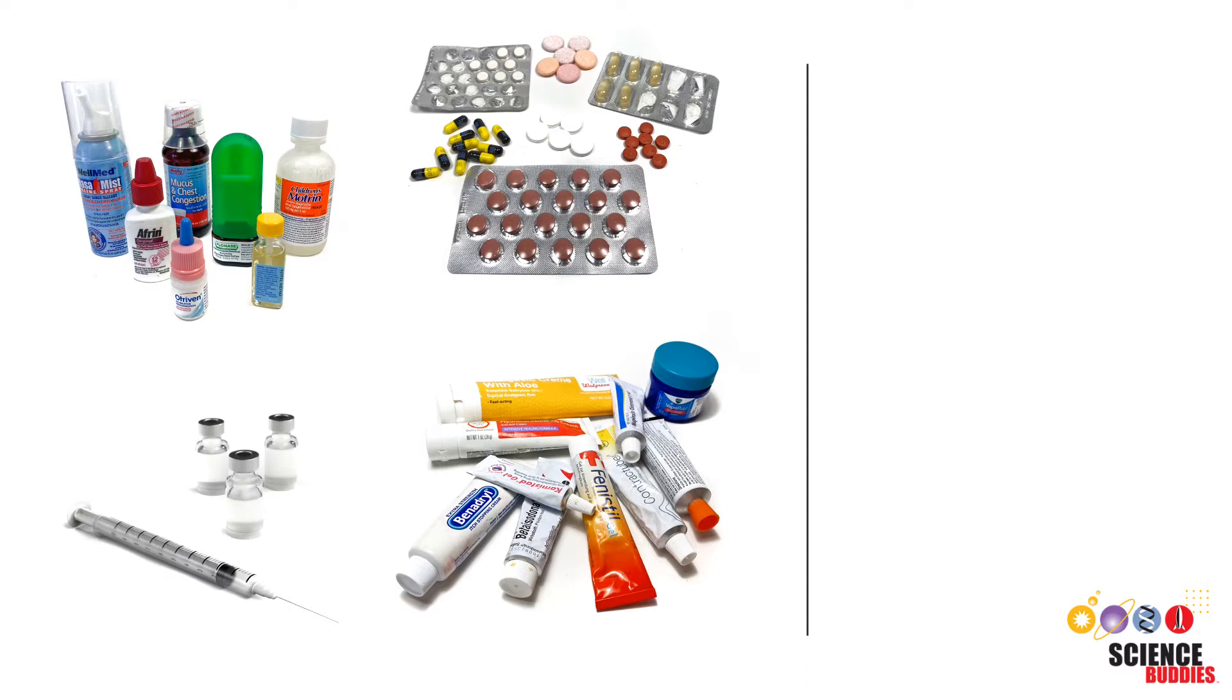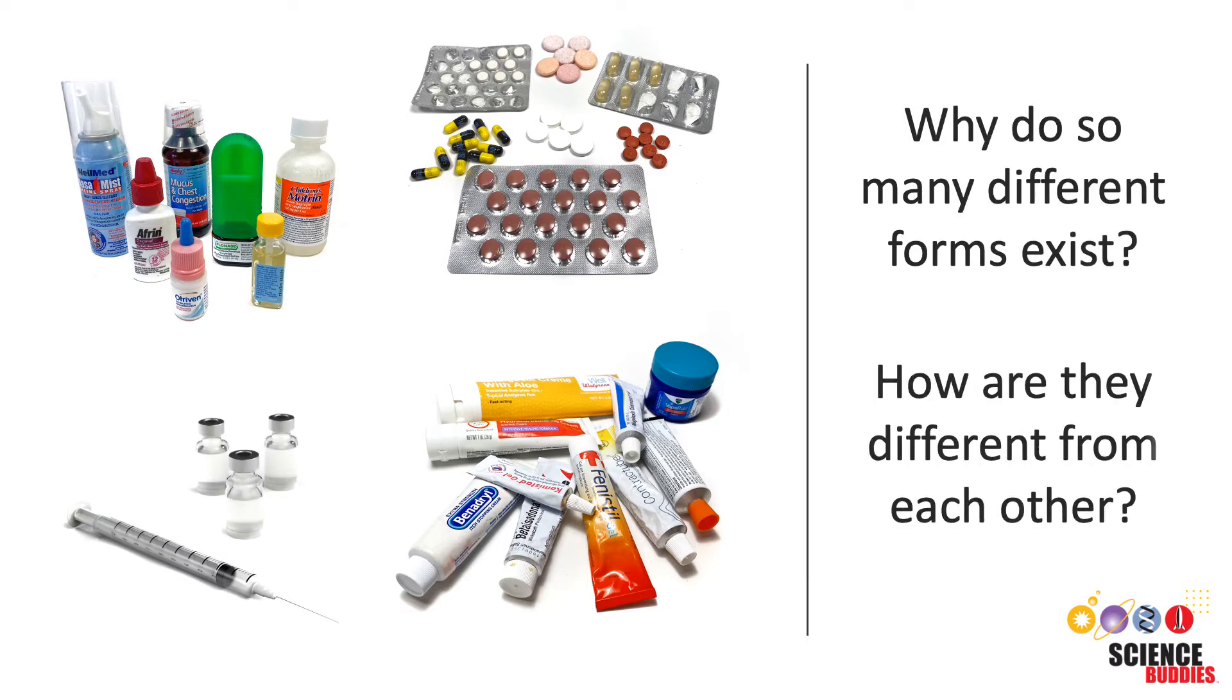All of these are forms of medicines used to cure, halt, treat, or prevent diseases. Why do so many different forms exist? How are they different from each other?